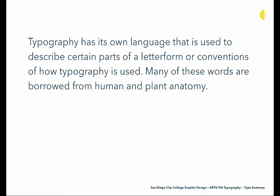Typography has its own language that is used to describe certain parts of a letter form or conventions of how typography is used. Many of these words are borrowed from human and plant anatomy. You'll notice quite a few of these terms are things that you know — things like arm and leg and stem. They're words that we associate with other anatomical structures, but typography has really borrowed these and put them into place.